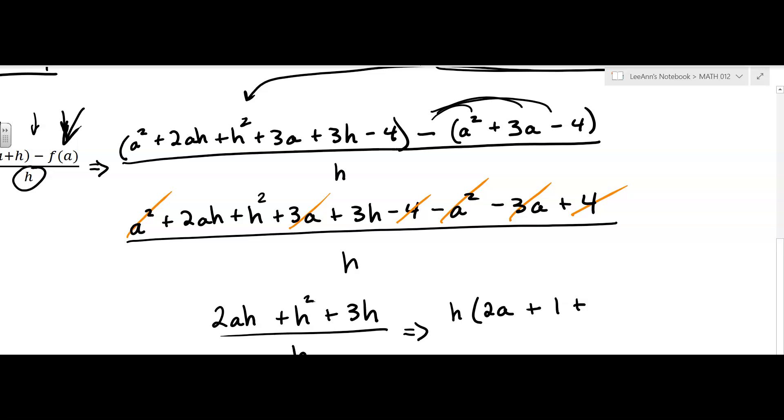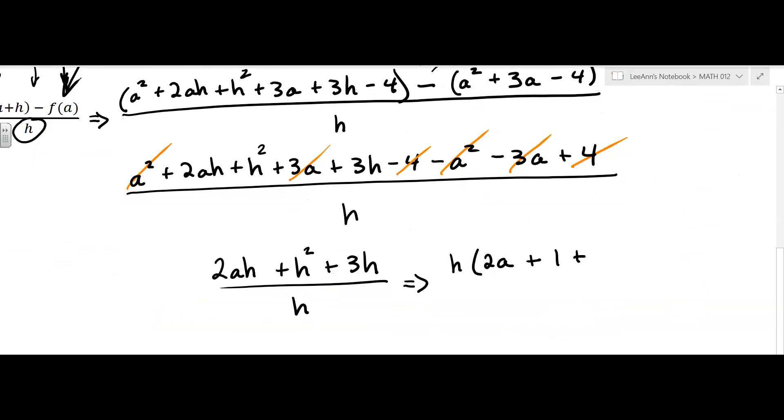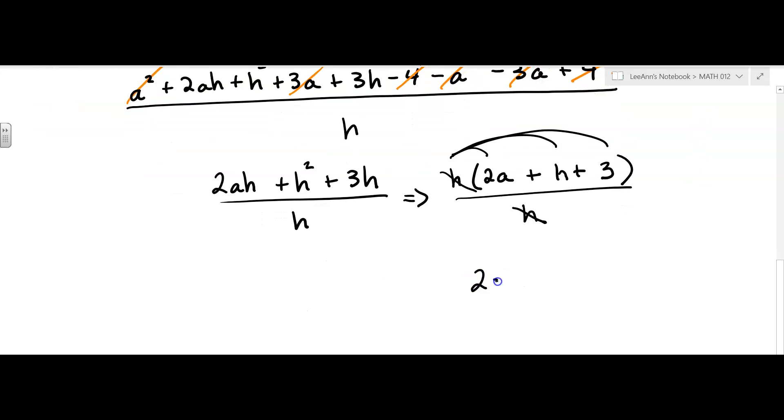We're factoring out the h. We all make mistakes and these problems sometimes are long. Now that should work. I can check it. 2ah, h squared, 3h. Yep. It's all good. All over h. Now those h's are going to cancel. So my final answer is going to be 2a plus h plus 3. And then we would just leave it like that.